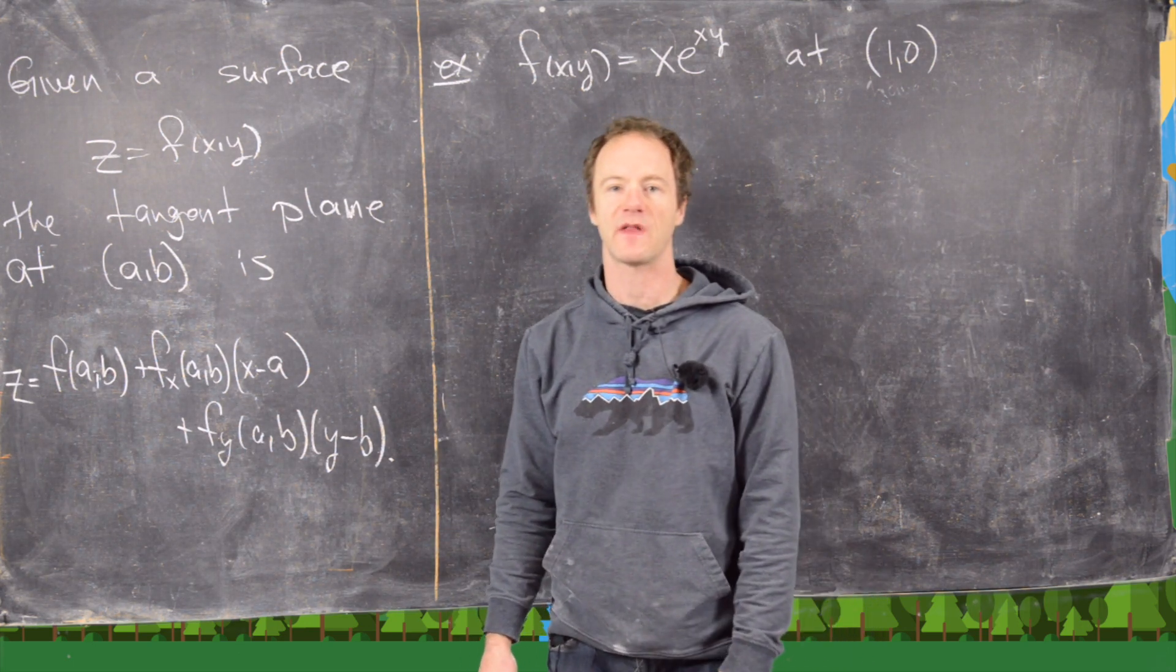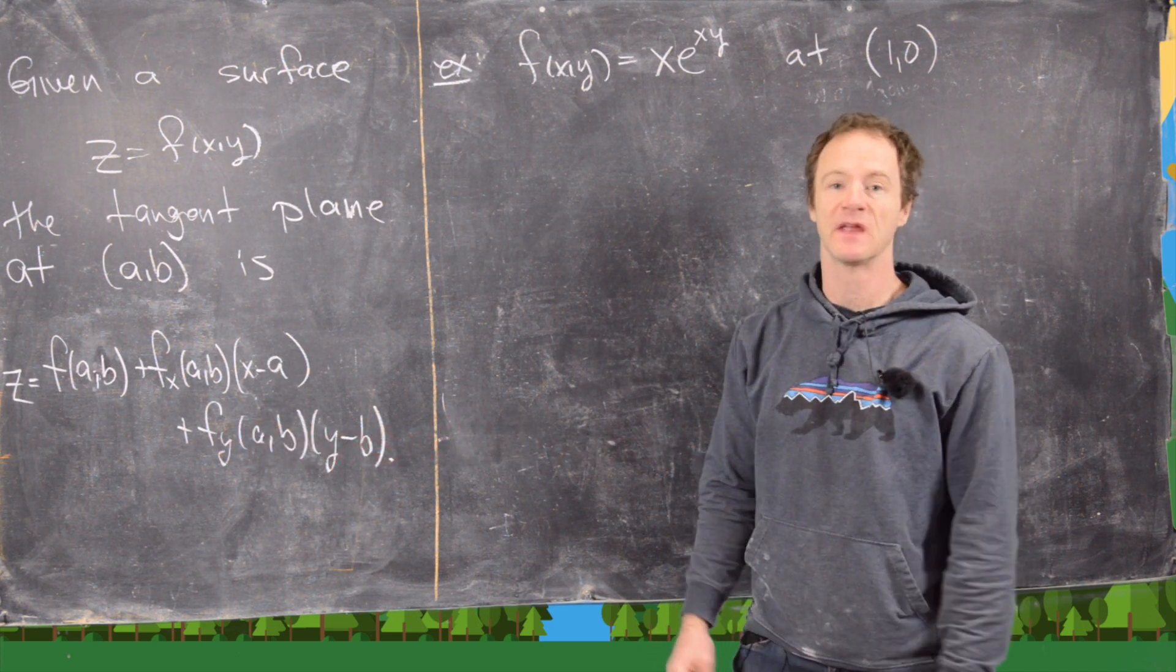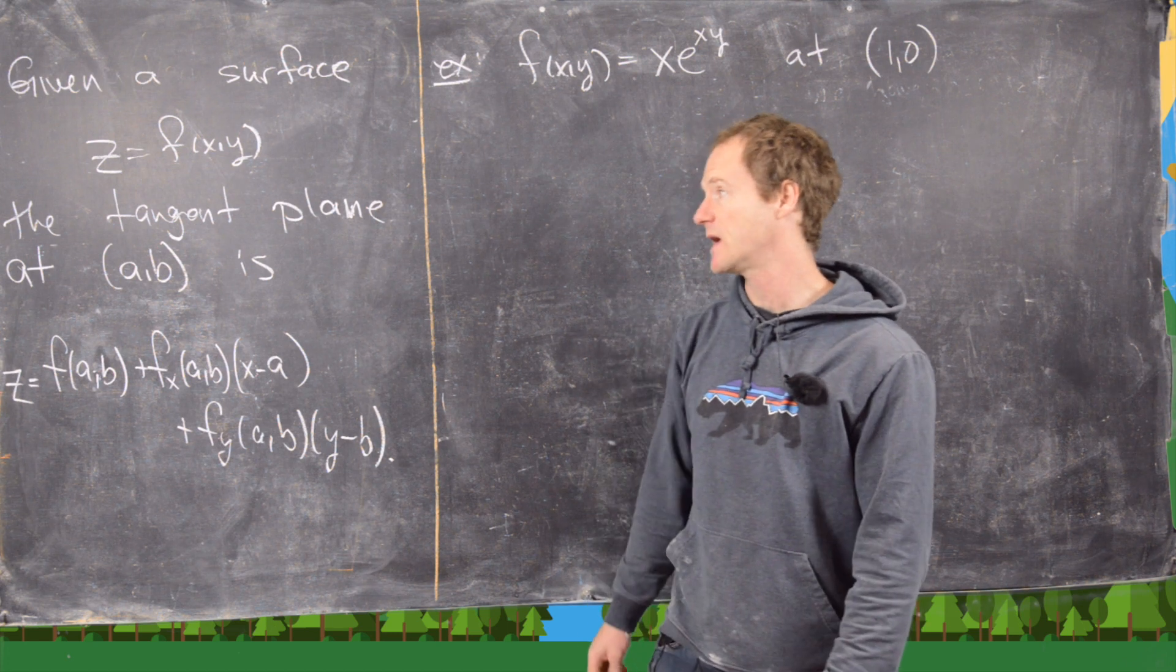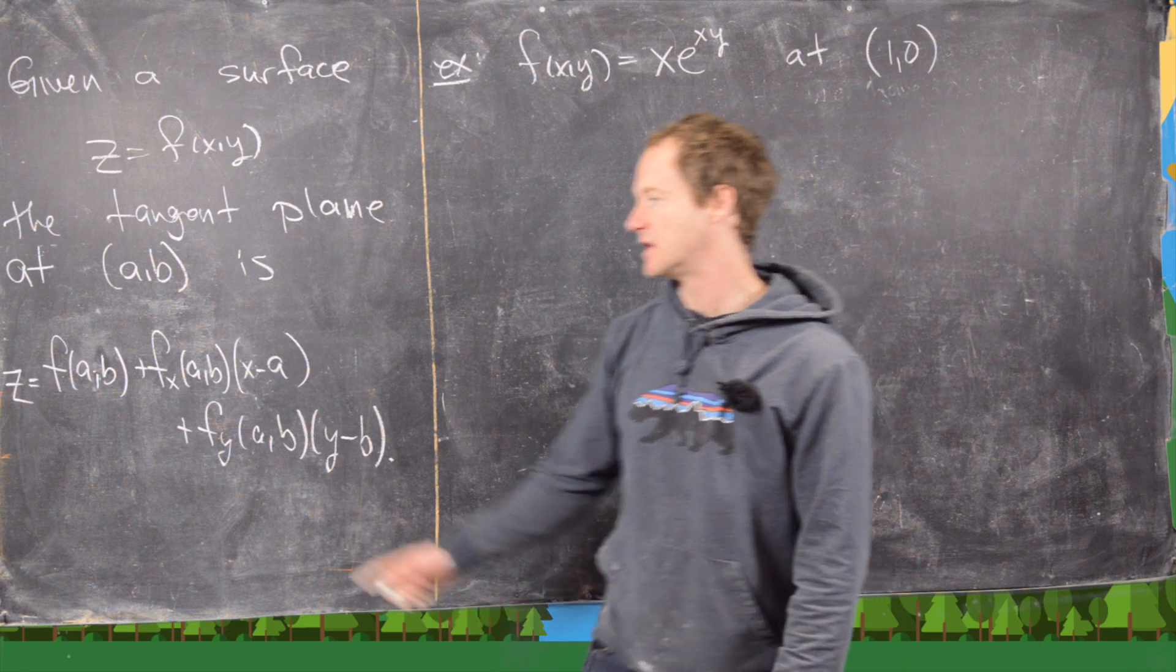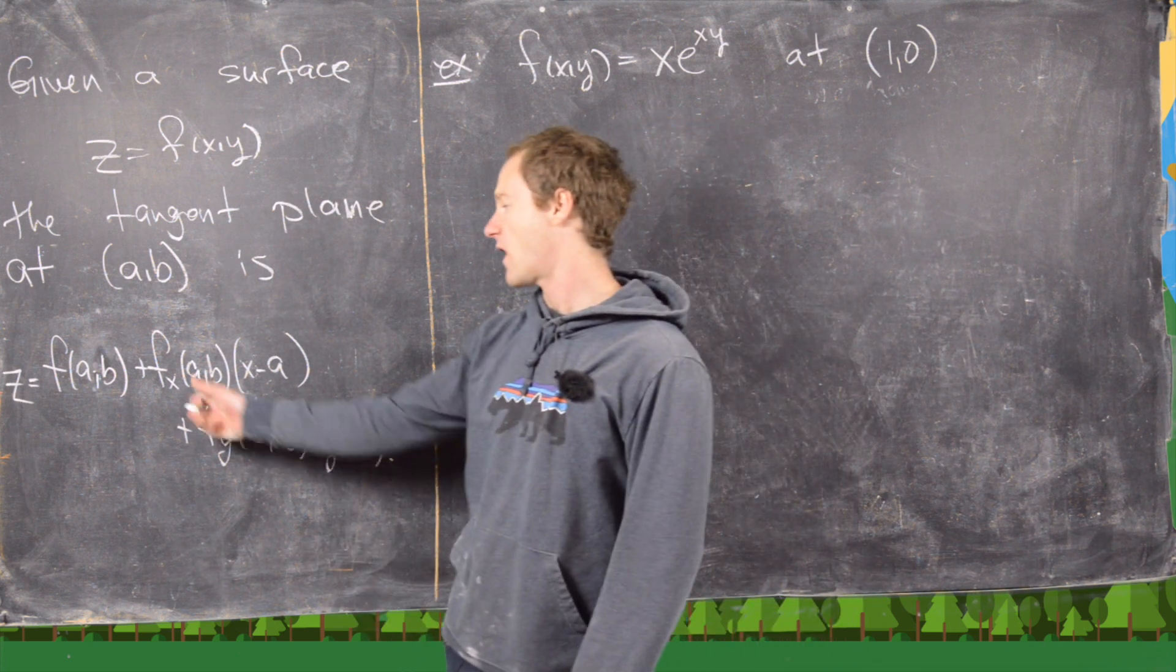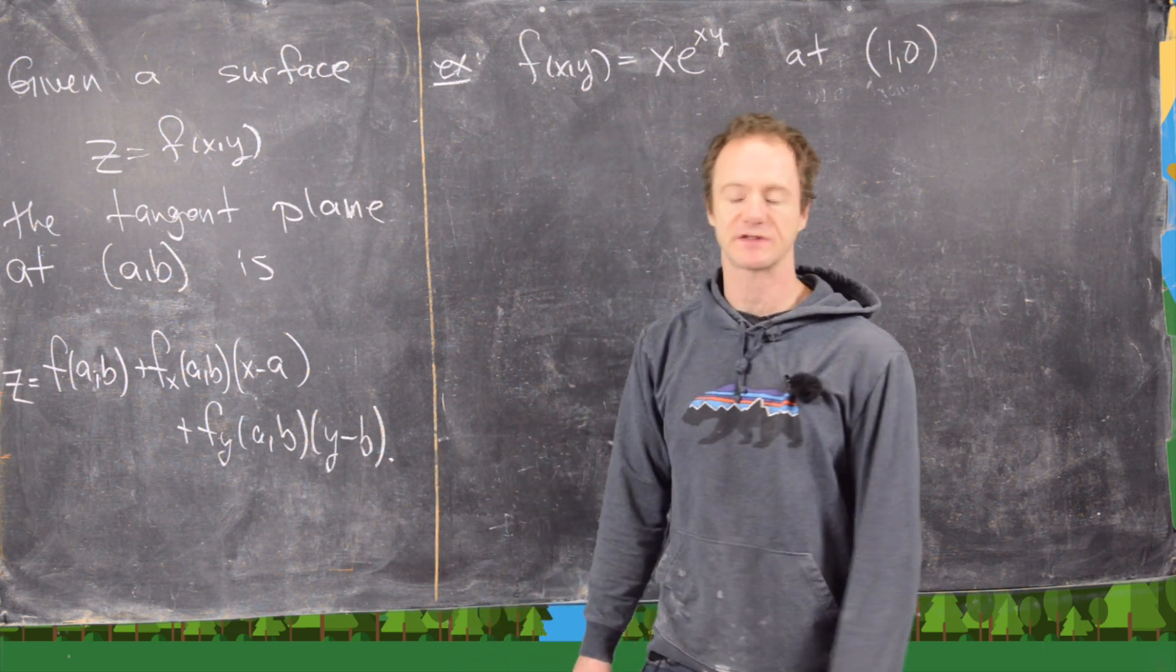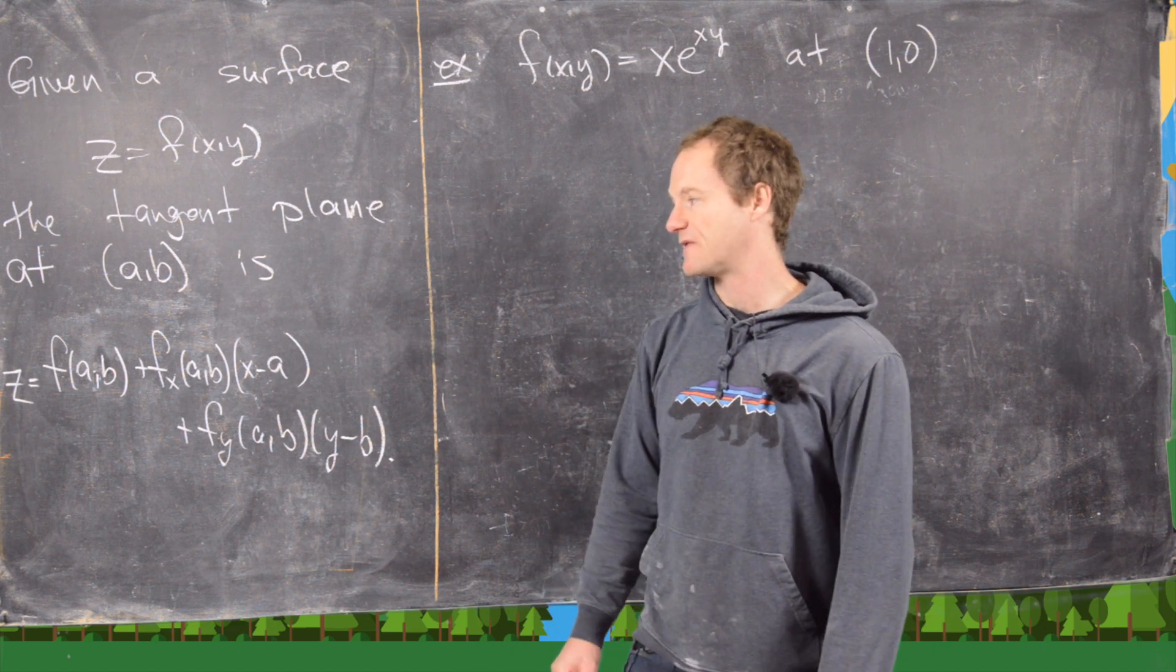In a previous video we derived the formula of a plane that is tangent to a given surface at a point. Let's recall what we got. Given a surface defined by z equals f of xy, the tangent plane at (a,b) is given by: z equals f of ab plus the partial derivative with respect to x evaluated at (a,b) times (x minus a), and then the partial derivative with respect to y evaluated at (a,b) times (y minus b).